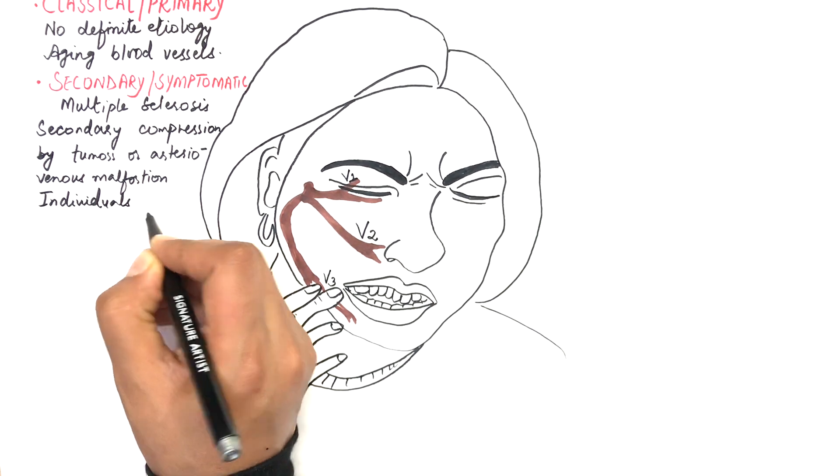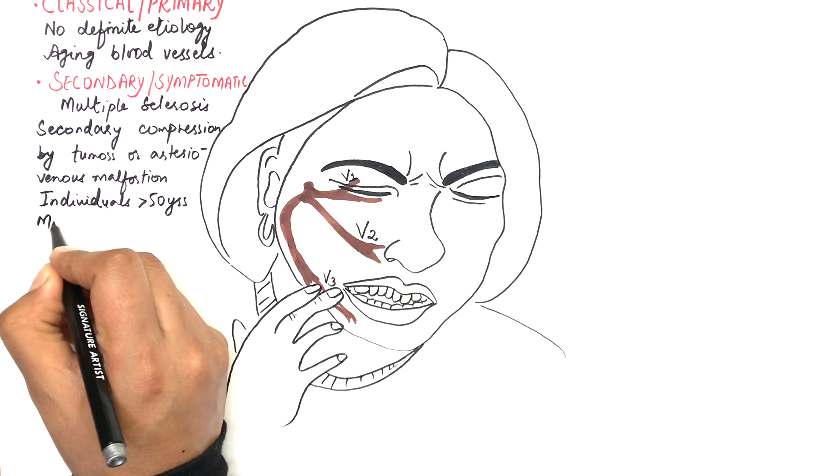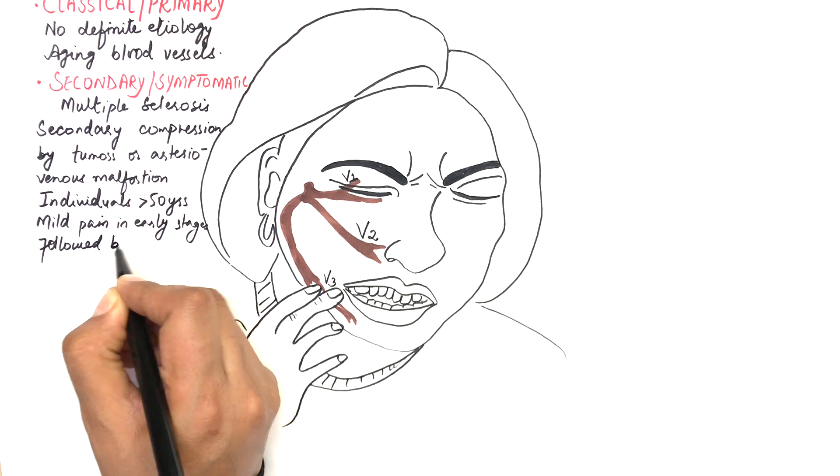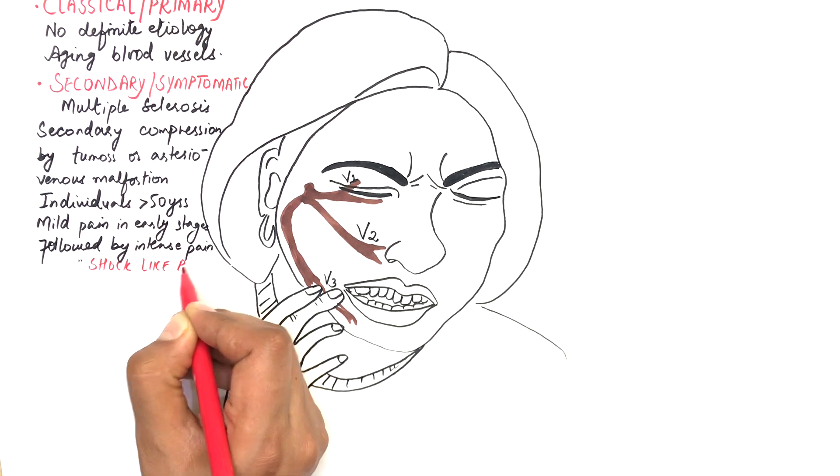Trigeminal neuralgia affects individuals older than 50 years of age, with women being affected more often than men. The patient experiences mild pain in early stages, which later on is followed by intense pain often described as shock-like pain.